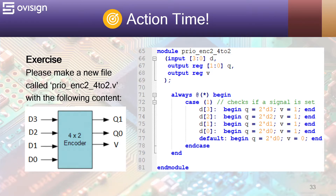Line 73 means that if d3 equals 1, then q equals 3 and v equals 1. It is extremely important to write the conditions in the descending order of priority, otherwise we won't get the right behavior for the priority encoder.